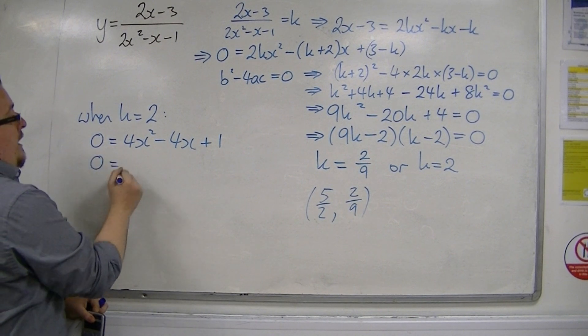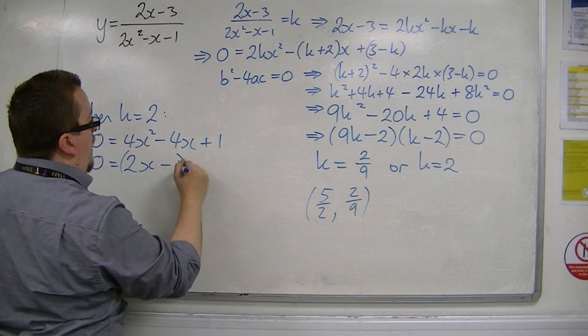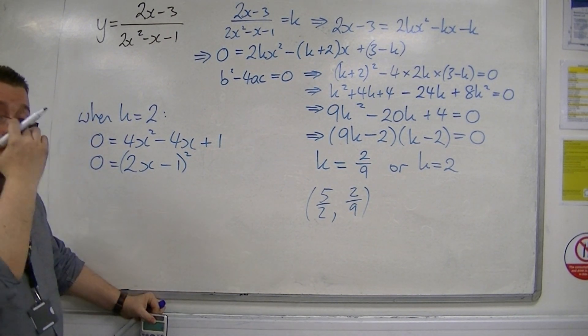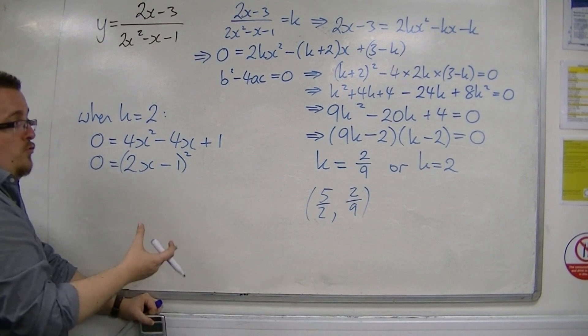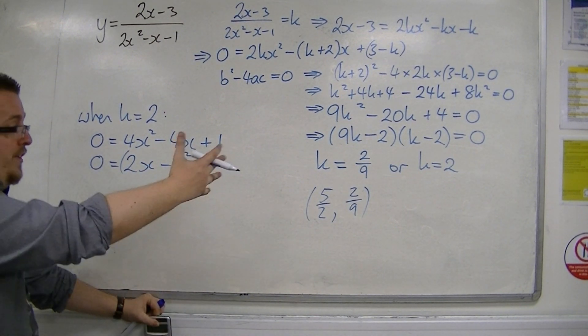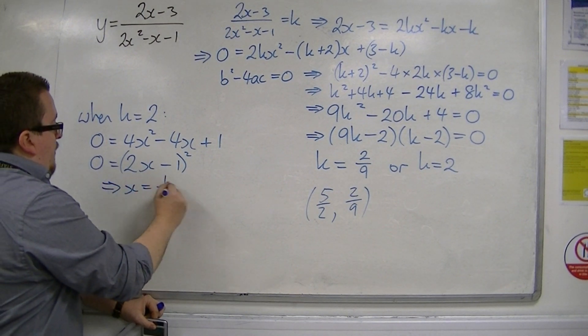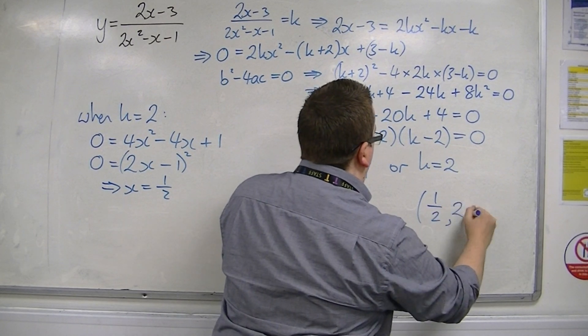So this is 0 is equal to 2x minus 1 squared. You should always find that you get one bracket squared here, because it should be a repeated root, as required, as we wanted. So that means that x is equal to 1/2. So the coordinates of the other stationary point is 1/2, 2.